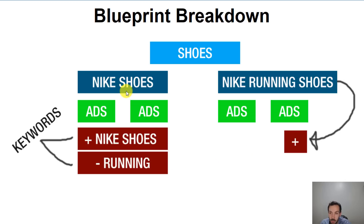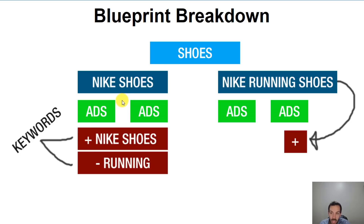Someone who types in 'Nike shoes' is very generic — we're not quite sure what they want. They're at a really early awareness stage, quite possibly. So we don't want to be too targeted with the ads, perhaps.